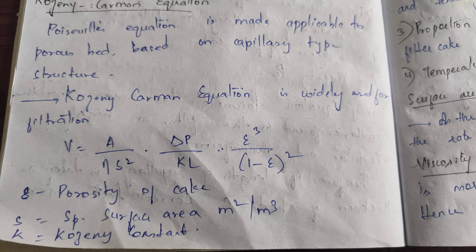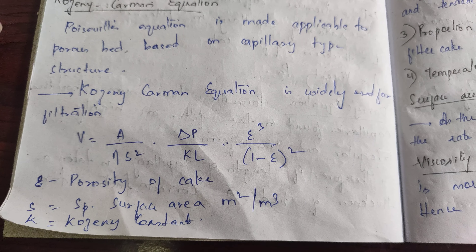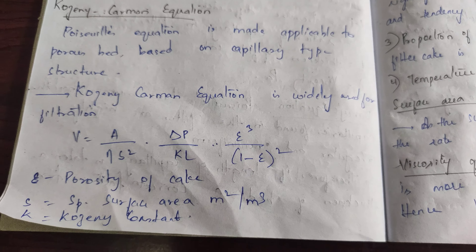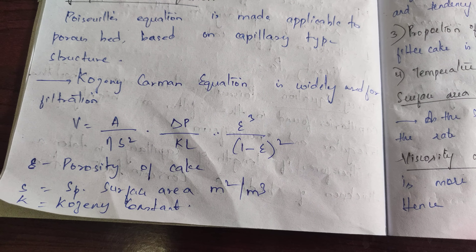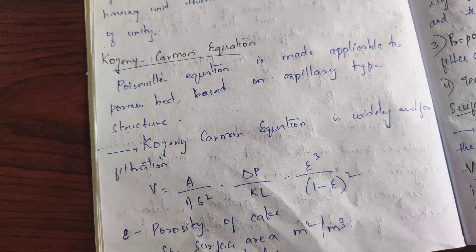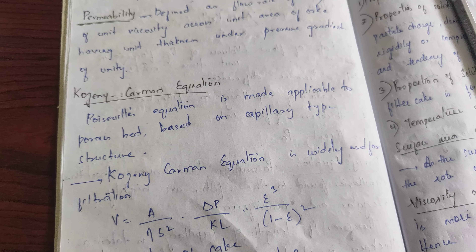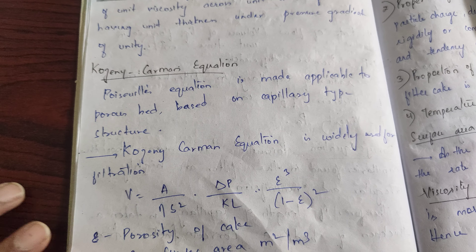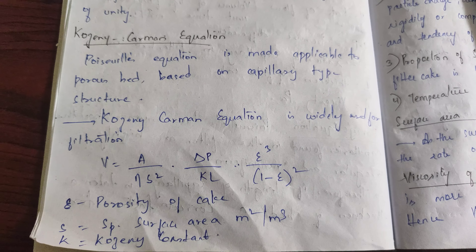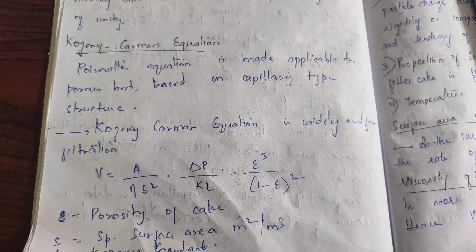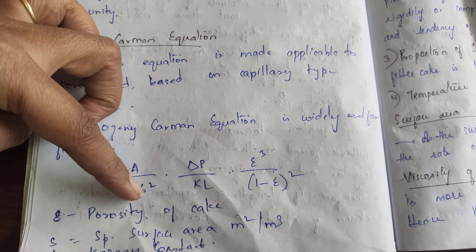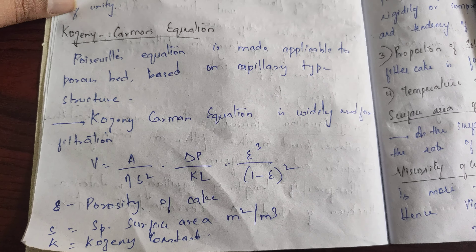He modified the equation to be: V = (A / η·S²) × (ΔP / KL), and he introduced one factor, epsilon E, given as E³ / (1 − E)². The full Kozeny-Karman equation becomes V = (A / η·S²) × (ΔP / KL) × (ε³ / (1 − ε)²). Here, epsilon is the porosity of the cake, S is the specific surface area, and K is the Kozeny-Karman constant.